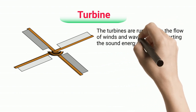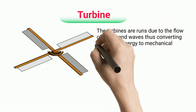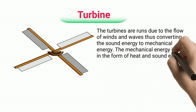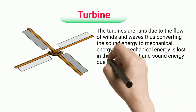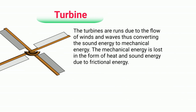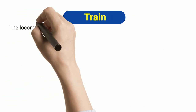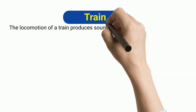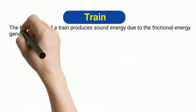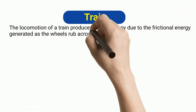Turbine: Turbines run due to the flow of winds and waves, converting sound energy to mechanical energy. The mechanical energy is lost in the form of heat and sound energy due to frictional forces.